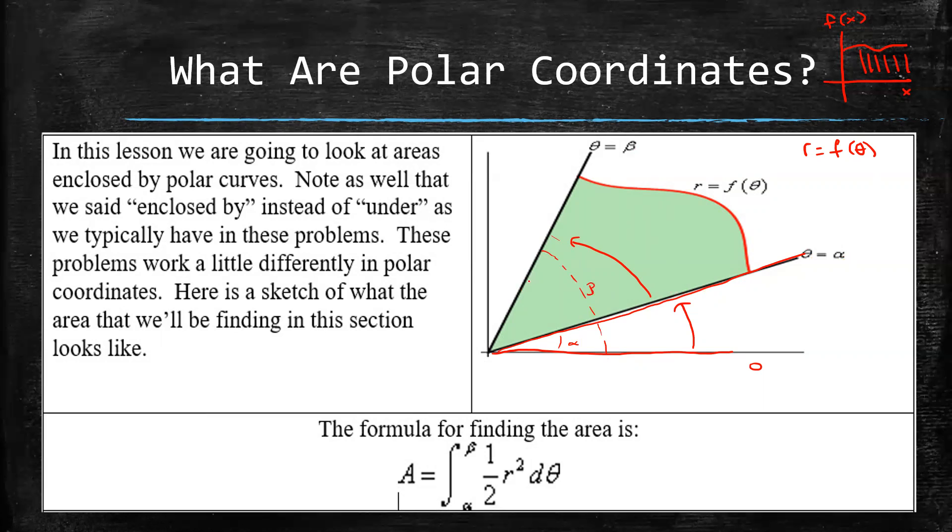And so the question is, what's the area enclosed in between the angle alpha and the angle beta like that? So basically the green region that you see here. And the formula for finding this area is going to be one half r squared d theta. And we're going to take a look at why and where that formula comes from.